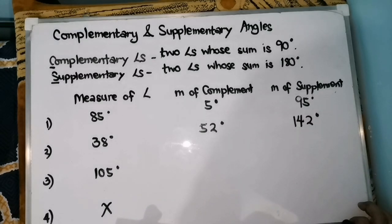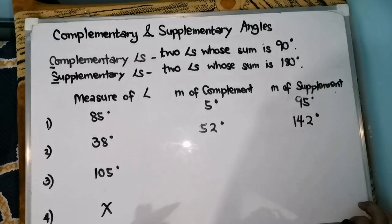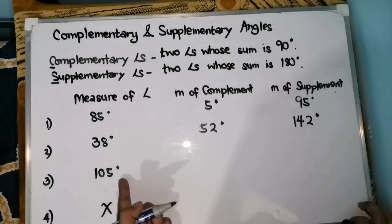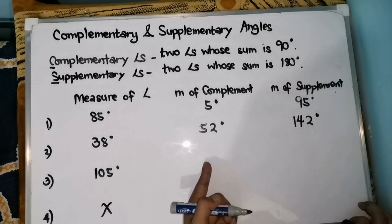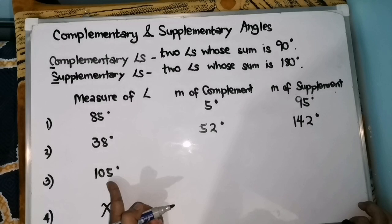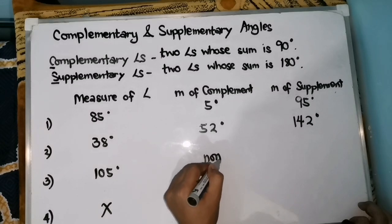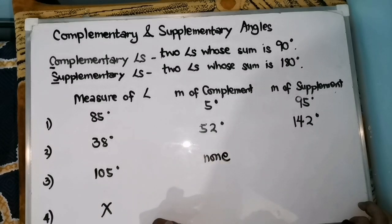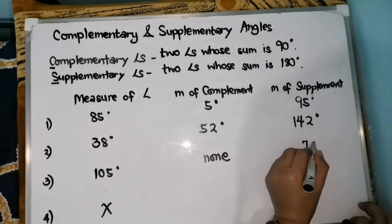Let's move to our third example: 105 degrees. What is the measure of its complement? Notice that the given measure is greater than 90 degrees. Therefore, there is no complement — there is none. How about its supplement? 180 degrees minus 105 degrees is 75 degrees.